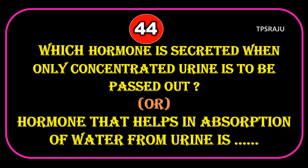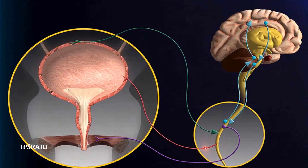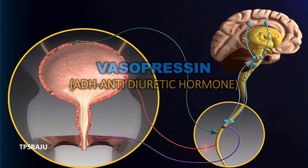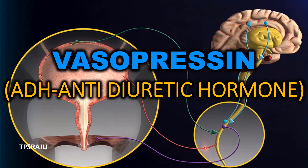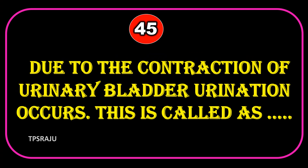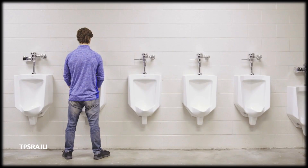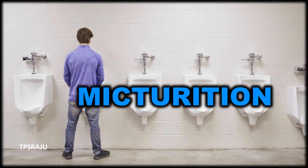Which hormone is secreted when only concentrated urine is to be passed out, or the hormone that helps in absorption of water from urine? Vasopressin — ADH, Anti-diuretic hormone. Due to the contraction of the urinary bladder, urination occurs. This is called Micturition.